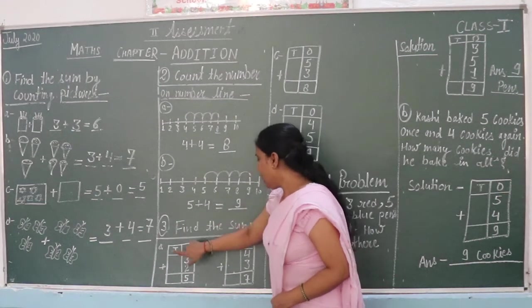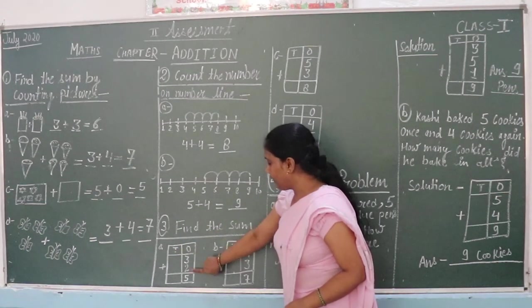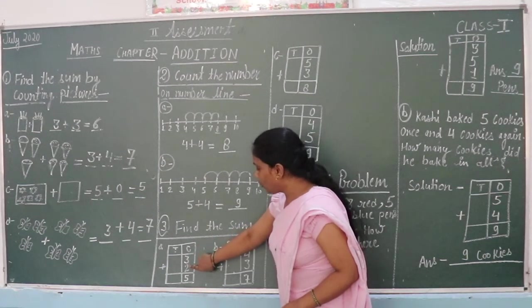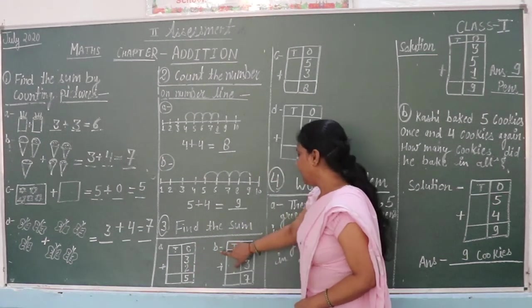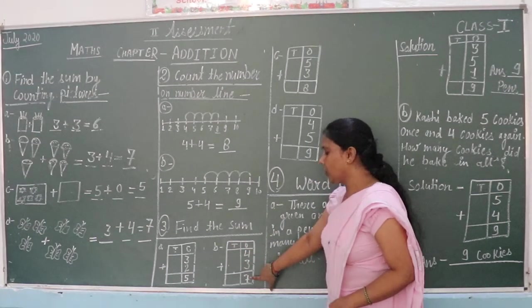Question 3. Find the sum. It means 10s and 1s. 3 plus 2 is equal to 5. B part. 10s, 1s. 4 plus 3 is equal to 7.